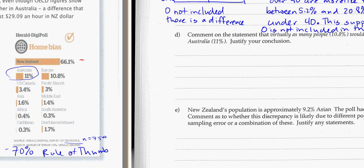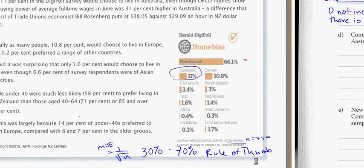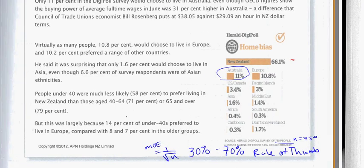Let's find it in the article. Virtually as many people, 10%, would choose to live in Europe as other countries. So here we're looking at Europe and Australia — 10.8% and 11%. They're pretty close.